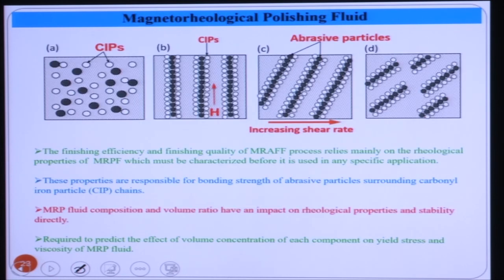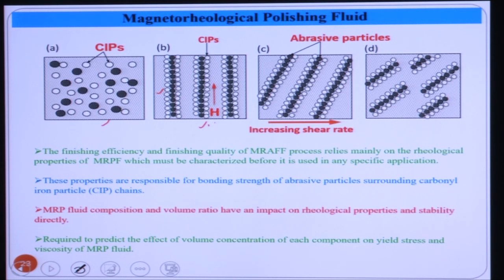Schematically, for the MR polishing fluid, when no magnetic field is applied, the CIP particles and abrasive particles are randomly and homogeneously distributed. When we apply a magnetic field, the CIP particles immediately form long chains. Outside these chains are the CIP particles, and the abrasive particles are held in between them. We are showing this schematically — it is not exactly the ideal case, but it demonstrates how it happens.